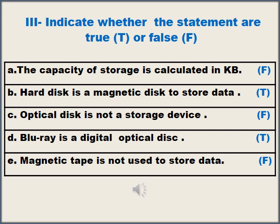Exercise 3 on page number 16 — Indicate whether the statements are true or false. Read the sentences carefully and by the help of explanation give the correct answer. A: The capacity of storage is calculated in KB — False. B: Hard disc is a magnetic disc to store data — True. C: Optical disc is not a storage device — False. D: Blu-ray is a digital optical disc — True. E: Magnetic tape is not used to store data — False.